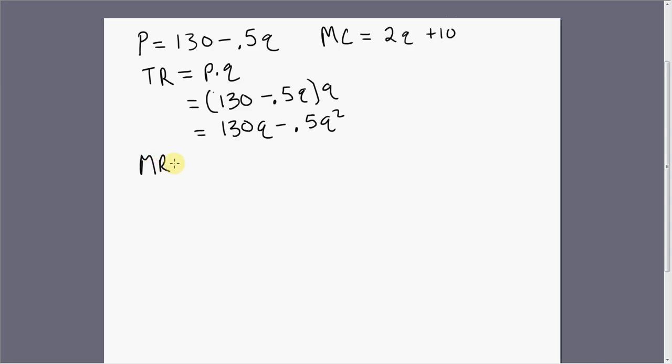Marginal revenue is the slope or derivative of the total revenue function. So taking the derivative of this equation, we get 130 minus Q. One thing to keep in mind is that marginal revenue will look like the inverse demand equation, except its slope will be twice as steep. So minus 0.5 becomes minus 1Q.